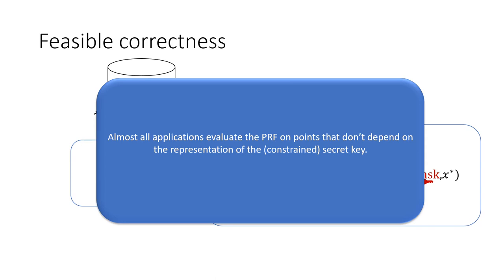Feasible correctness is sufficient for almost all applications because in nearly all of them, when evaluating a PRF, we rarely do so on a point that depends on the bit representation or description of the PRF key.